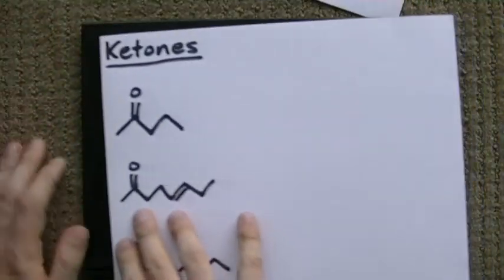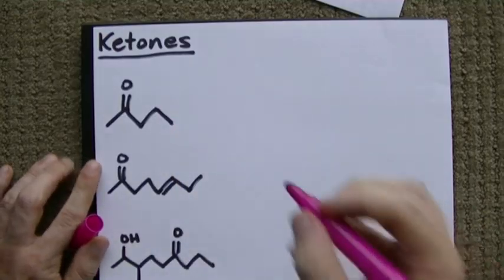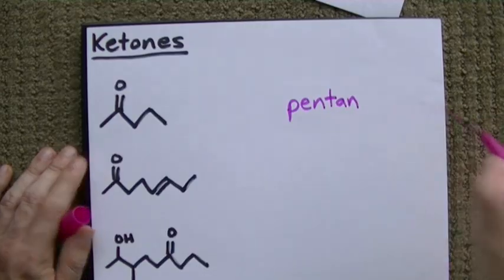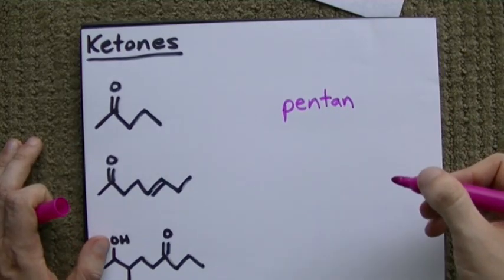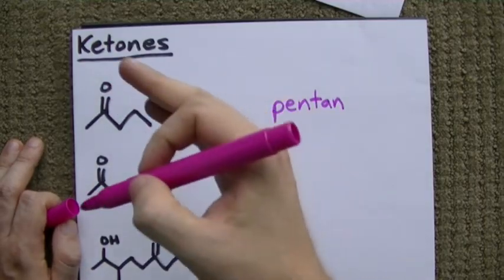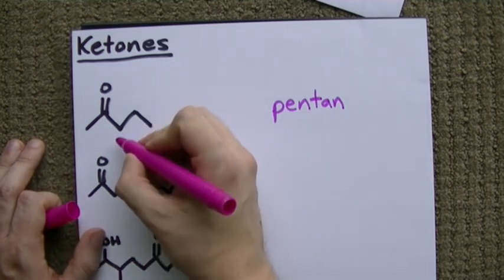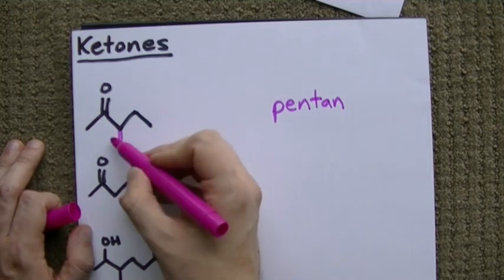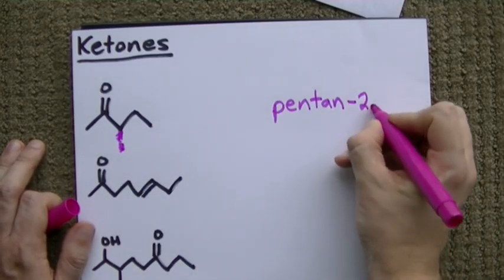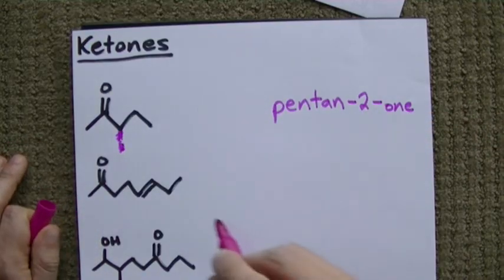Let's try this again, but with ketones. Here we have one, two, three, four, five carbon chain. Man, I must have a thing for five. All carbon-carbon single bonds. And we have a double-bonded oxygen. But it's in the middle. So it's an one, a ketone. But that double-bonded oxygen didn't have to be on the second one. It could have just as easily been on the third one. I mean, it wasn't. But it could have been. Which means we have to put a two here to show that that's where the ketone group is.